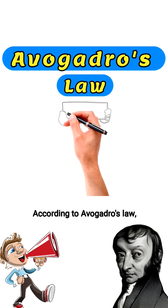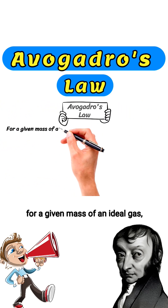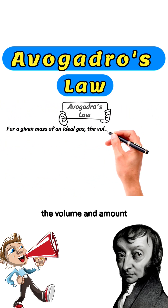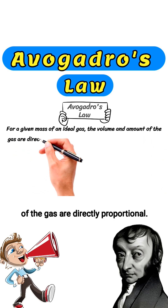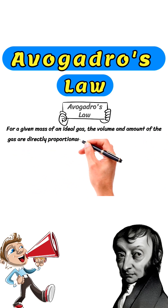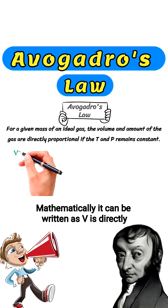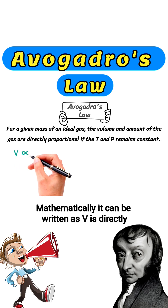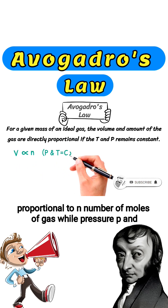According to Avogadro's law, for a given mass of an ideal gas, the volume and amount of the gas are directly proportional, if the temperature and pressure remains constant. Mathematically it can be written as: V is directly proportional to n, the number of moles of gas, while pressure and temperature are held constant.